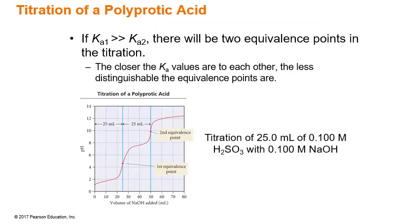We can also titrate polyprotic acids. We've been looking at monoprotic up to this point, but with polyprotic we can tell because there are two different equivalence points, or two portions of the curve that have a steep incline. When we have polyprotic acids, the first Ka — the dissociation of that first hydrogen — tends to be much stronger than the second one.